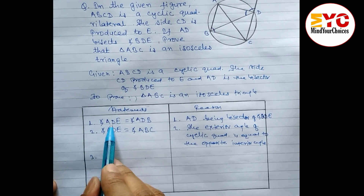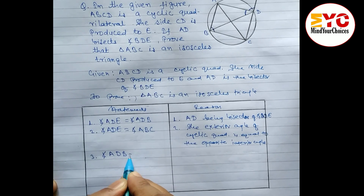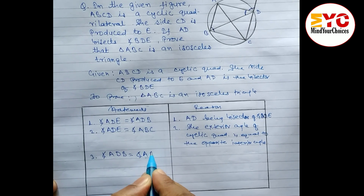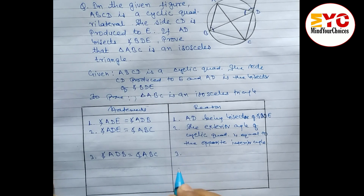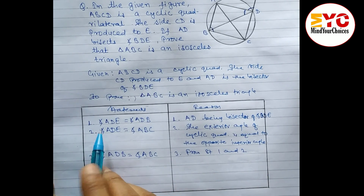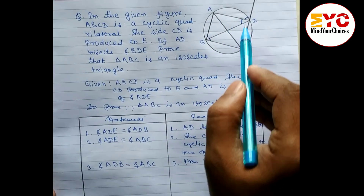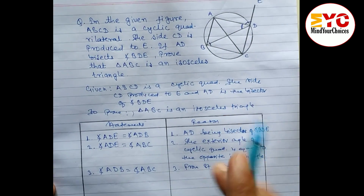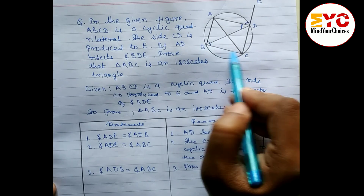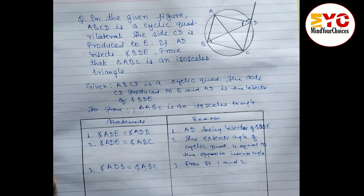Statement 3: Since the LHS of statements 1 and 2 are both equal to angle ADE, the RHS must also be equal. Therefore, angle ADB equals angle ABC. Reason: from statements 1 and 2.